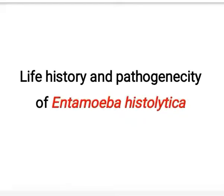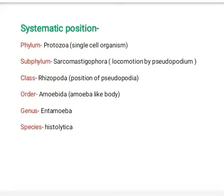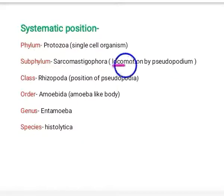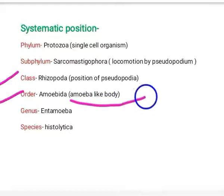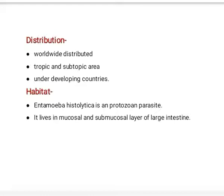In this video lecture we are going to discuss the life history and pathogenicity of Entamoeba histolytica. The systematic position: it belongs to phylum Protozoa, as it is a single-celled organism; subphylum Sarcomastigophora, because it has a locomotory organ — the pseudopodium; class Rhizopoda; order Amoebida, as the body is amoeba-like; genus Entamoeba and species histolytica. Entamoeba histolytica is worldwide distributed, mostly occurring in tropical and subtropical areas.